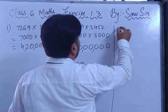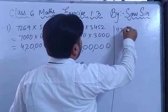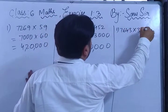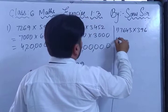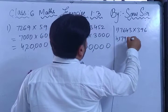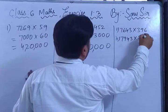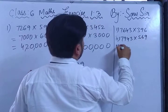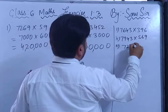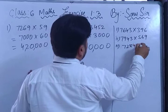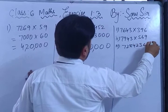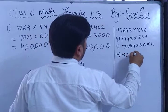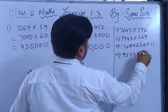I am giving you homework questions to solve. Question 1: 7643 × 396. Question 2: 7943 × 569. Question 3: 728436 × 11. Question 4: 9234 × 39.